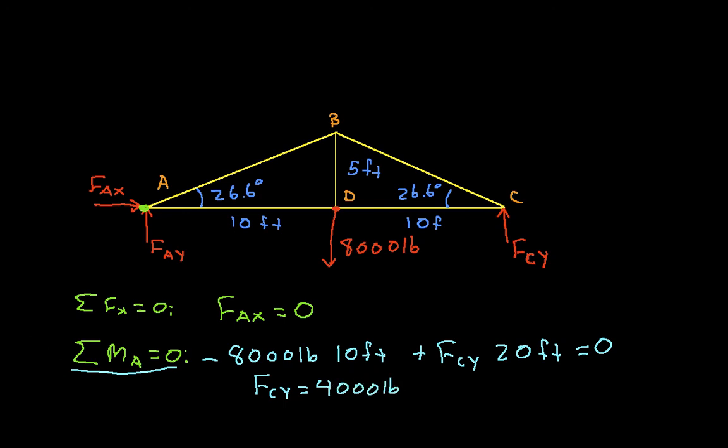And finally, the sum of forces in the Y direction is equal to zero. Well, I have FAY minus 8,000 plus FCY is equal to zero. I know FCY is 4,000 pounds, and from this then I can easily solve for FAY to be 4,000 pounds, which is what you would expect if I have a load right in the middle of the bridge, and the bridge itself is symmetrical, then you would expect the reaction forces on both sides to be symmetrical. So each side of the bridge is supported by half the load.